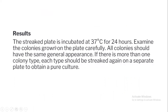Results: the streak plate is to be incubated at 37 degrees Celsius for 24–48 hours, after which the colonies are examined carefully. Colonies having the same or different general appearance are indicative of different organisms. If more than one colony type is present on the plate, each type should be re-streaked on a separate plate in order to obtain a pure culture of that particular microorganism.